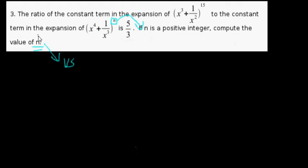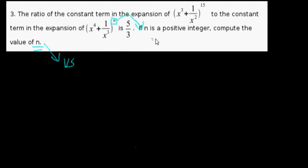Okay guys, we're back. Hopefully you saw the last video so you know what I'm doing and why I'm doing it. Let's see what this problem wants us to do. We want to find this term right here, and we know that the constant term in this expression divided by the constant term in this expression is five over three. So we're going to need to find what the constant term is.